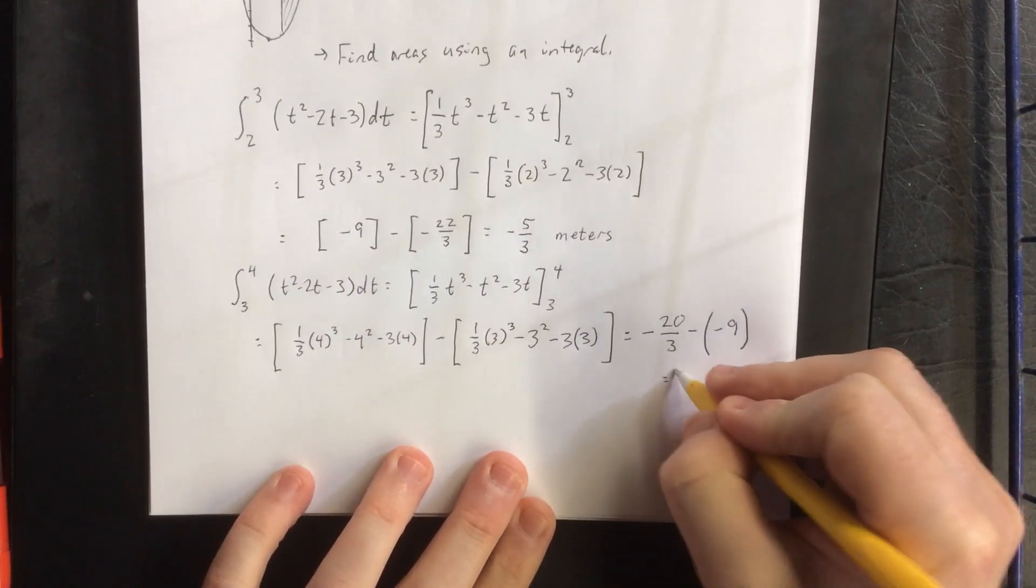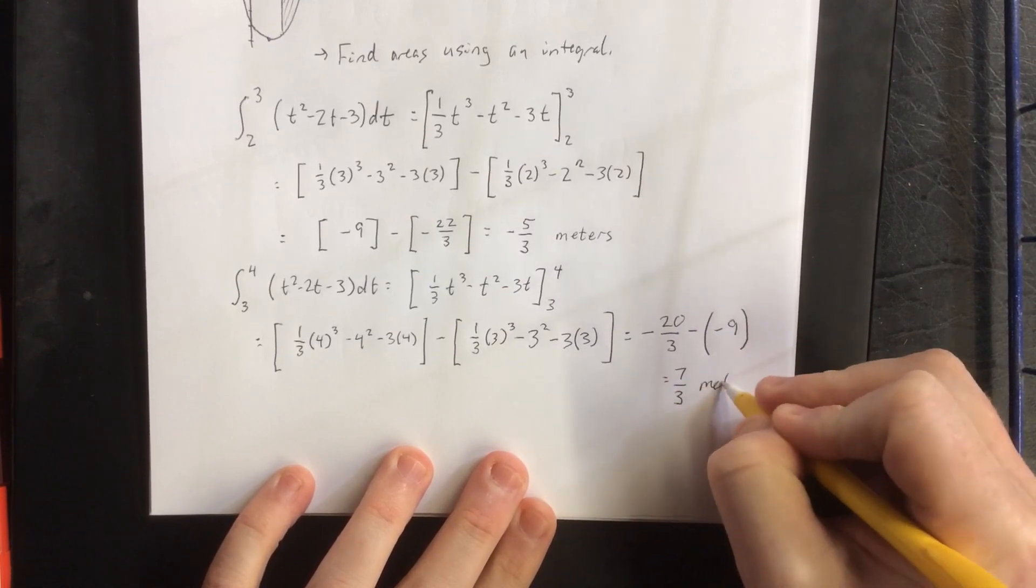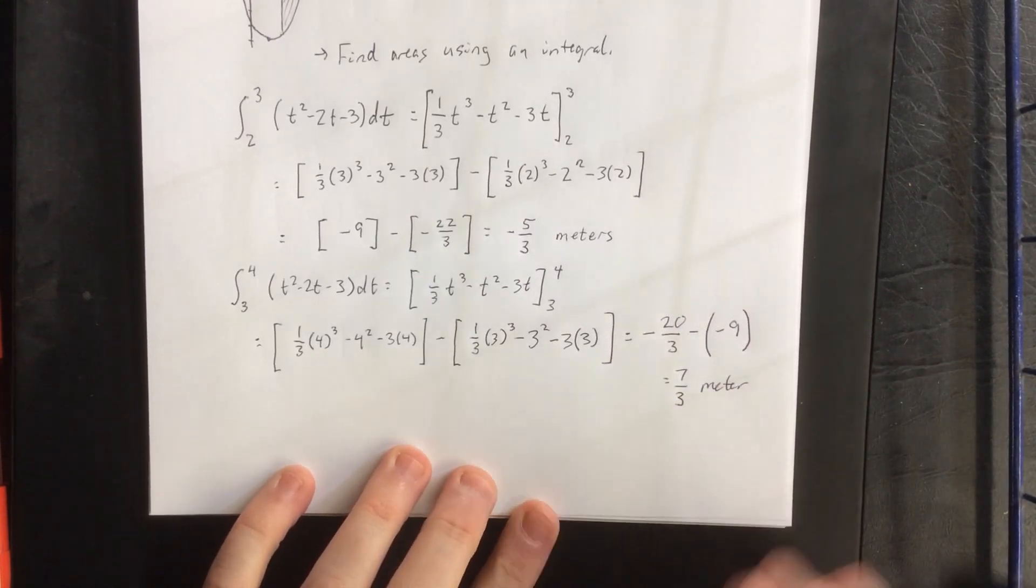So -20/3 minus what we got when we plugged in 3 earlier, which was -9. Getting a common denominator for these, this lets me know that it moves in the positive direction a total of 7/3 meters.